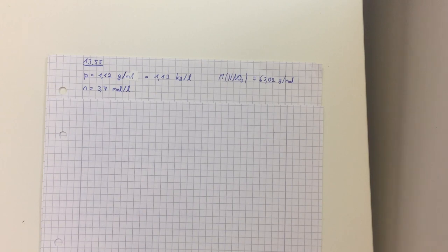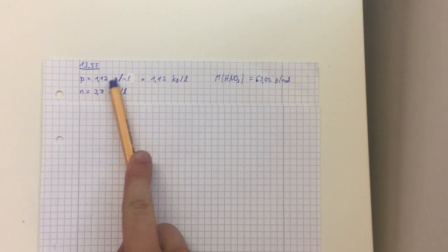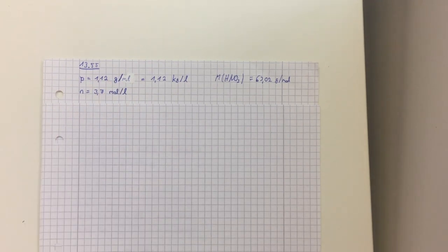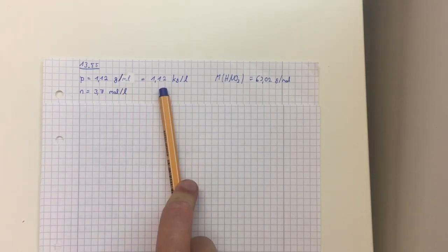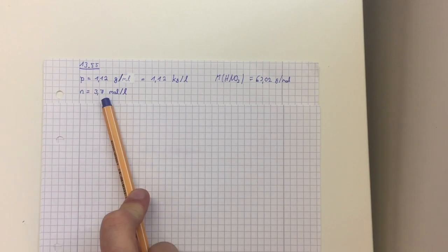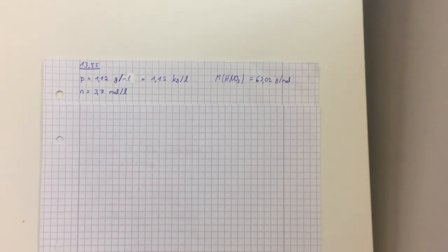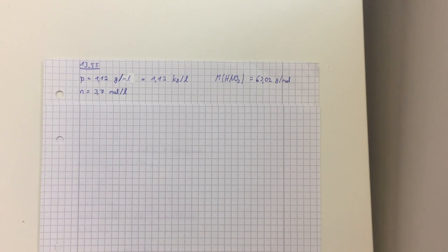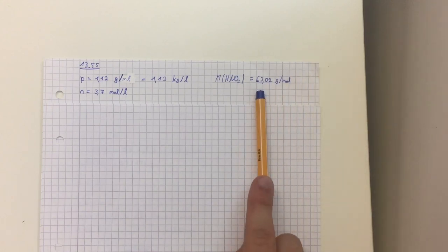When we first look at the exercise, we see that the density is given as 1.12 grams per milliliter, and this is equal to 1.12 kilograms per liter. Then we see that the molarity is given as 3.7 moles per liter, and with the periodic system we can get the molar mass of HNO3, which is 63.02 grams per mole.